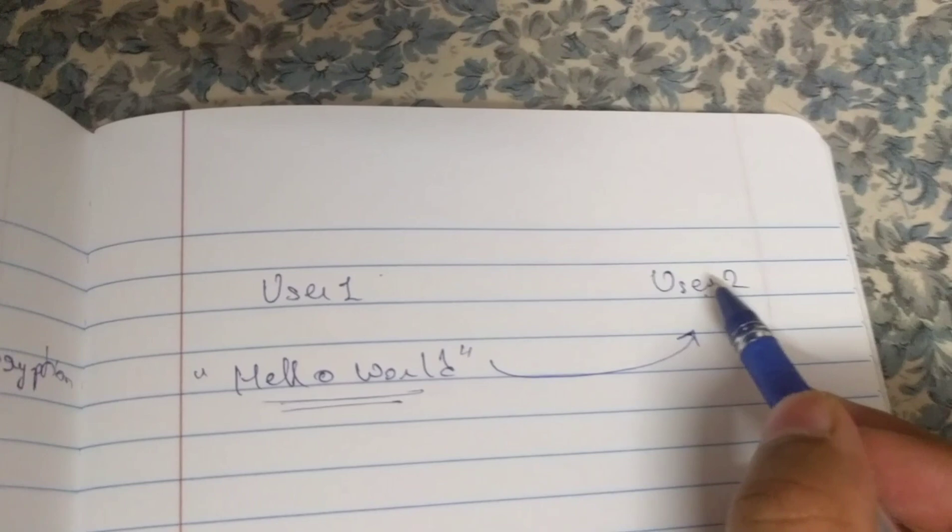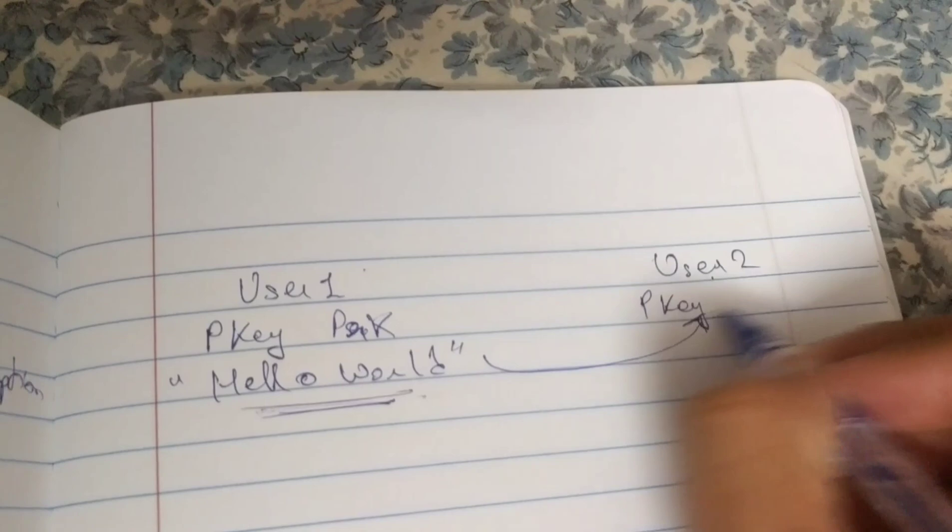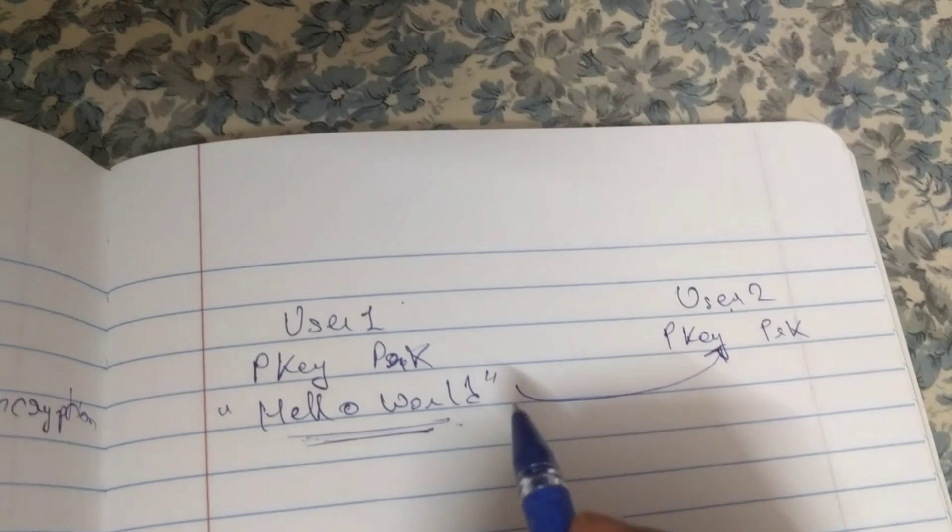To do this safely, it is very important that user one encrypts this message, turning it into some random characters, and user two decrypts it and receives it in exactly the original format without the loss of any data. The way that a public encryption system works is that user one and user two both have two keys: a public key and a private key.